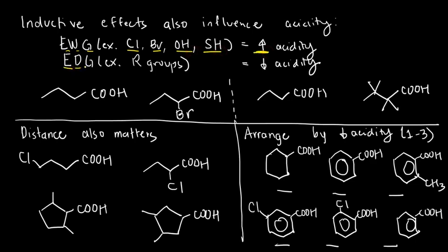And electron-donating groups, like methyl groups, ethyl groups, alkyl groups in general, benzene can do, will decrease acidity.